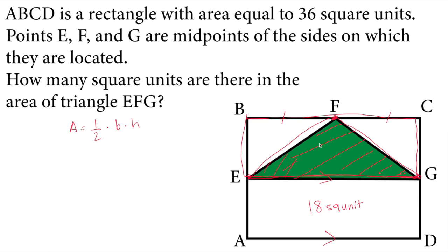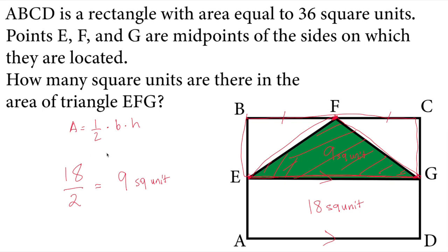The area will be 9 square units, because the area of the top rectangle is 18. If you divide it by two — taking half of it according to the rule — it will be 9 square units. So this is our solution.